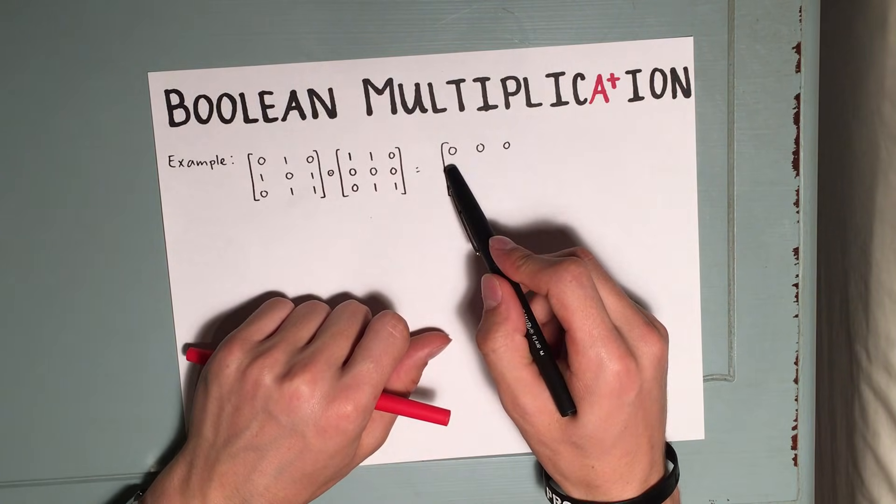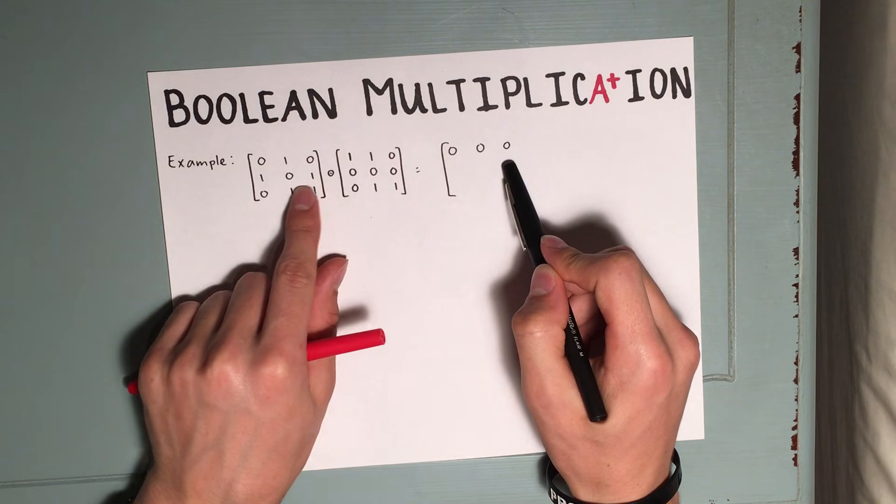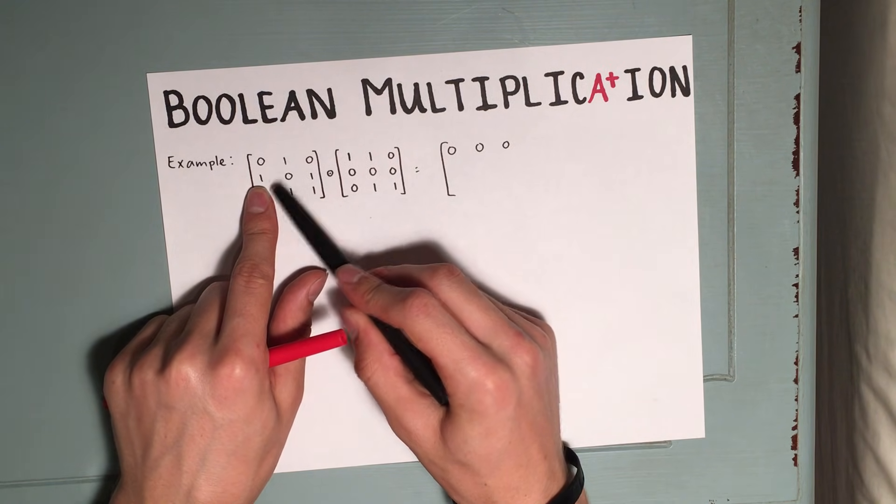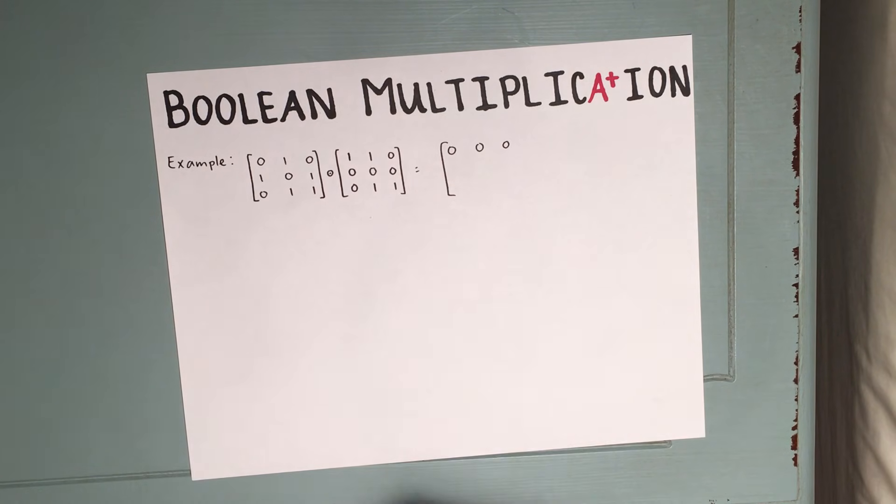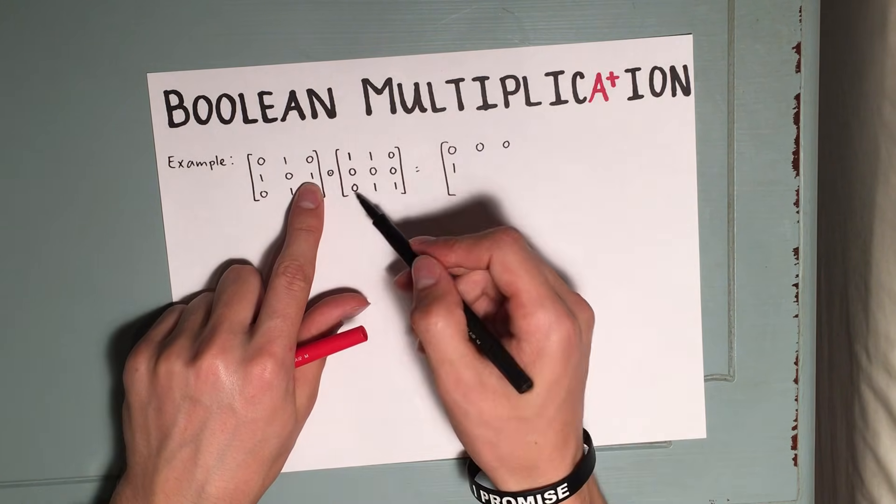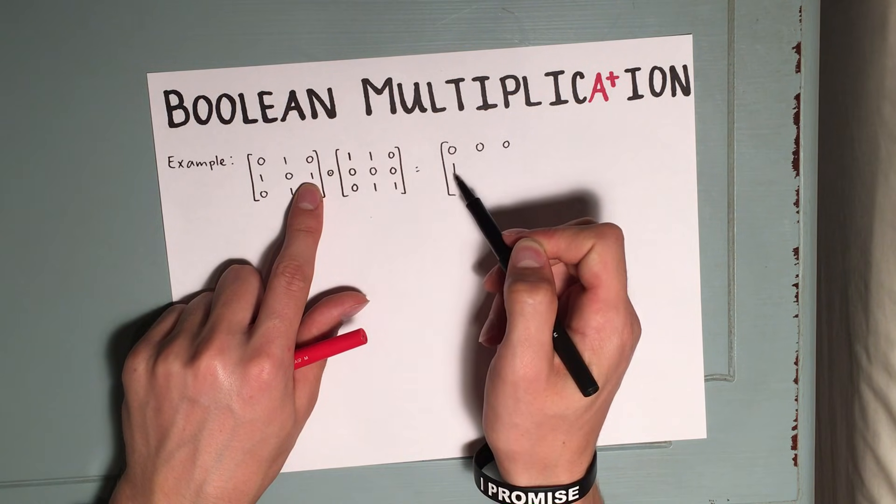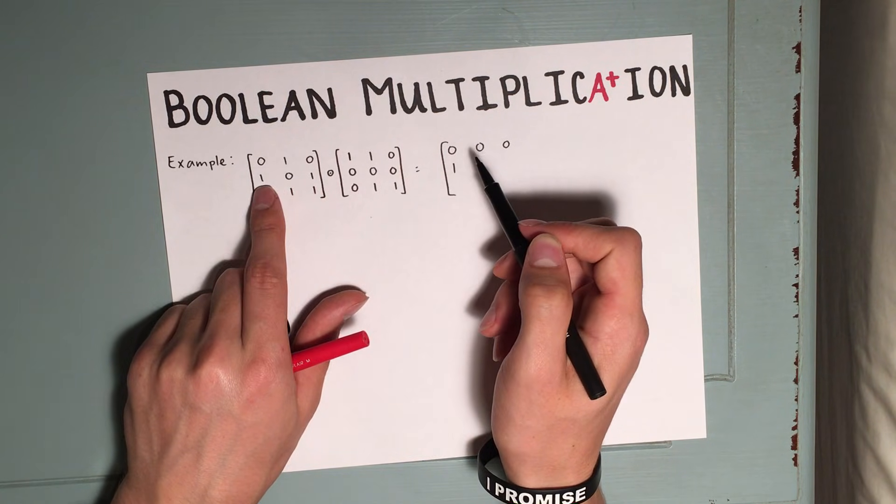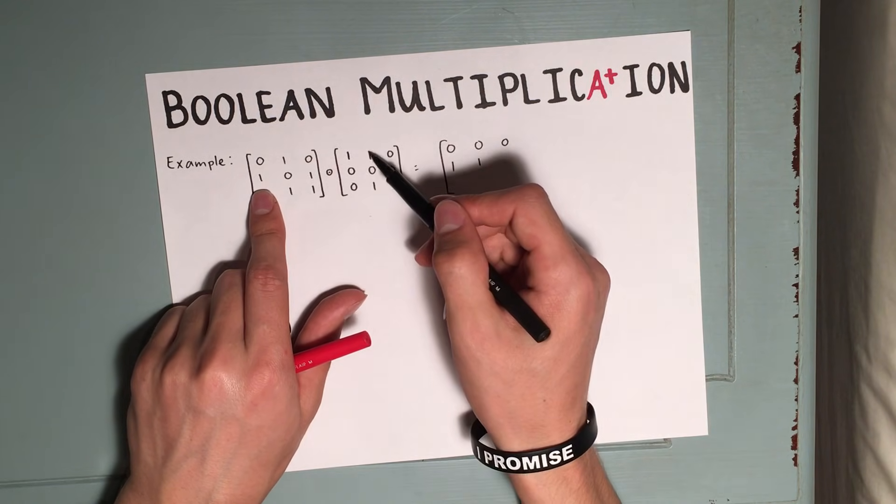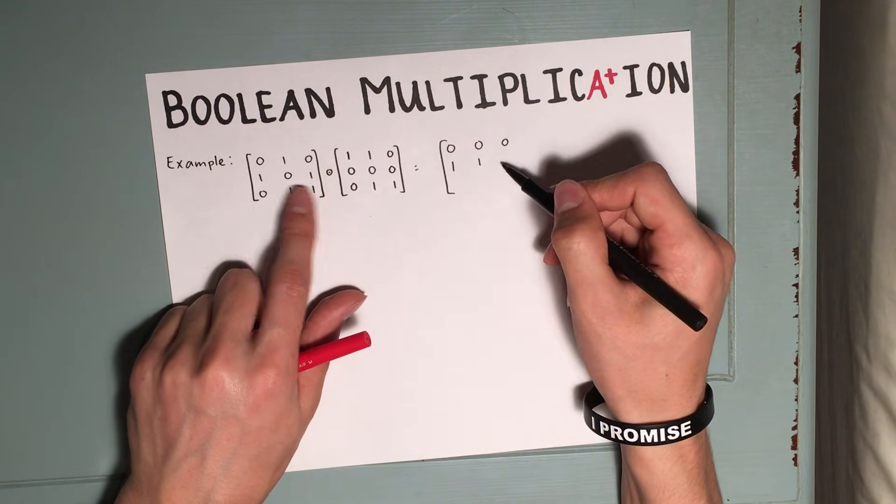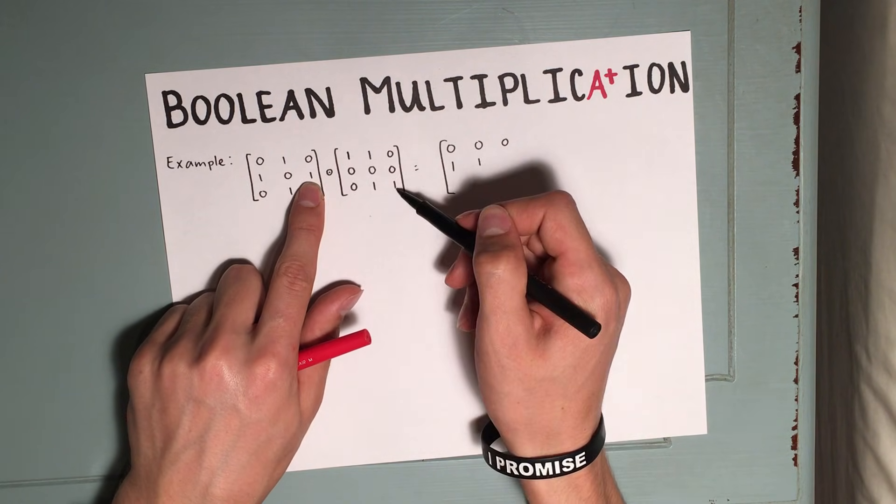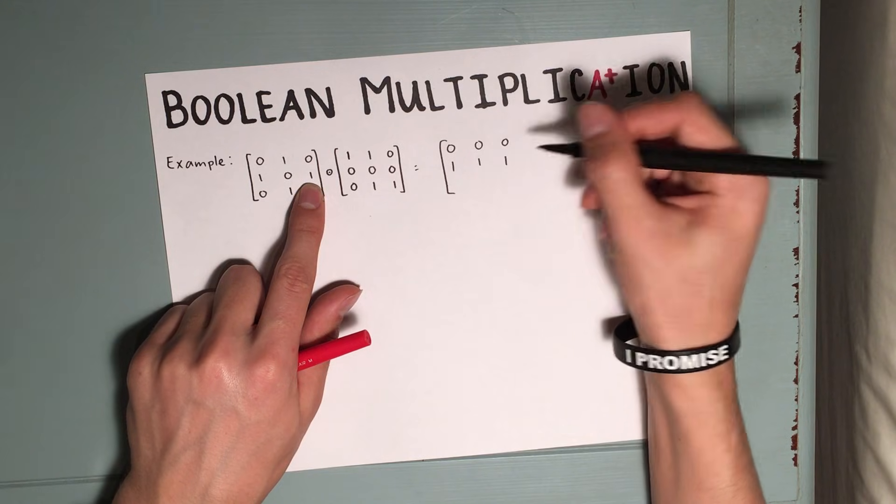We do the same thing again to find the second row, but we use the second row of the first matrix. Now, in the first position of the second row here, we have a one, and we do have a one matching here. So we can write a one. Even though we also have a one in the third position and no one in this third position, that doesn't matter. We only need one match. For the second row, second column, we have the same match. This first position, this first position. And now for the third row, or for the third column, we have a one in the third position and a one in this third position. So we complete our row of ones.